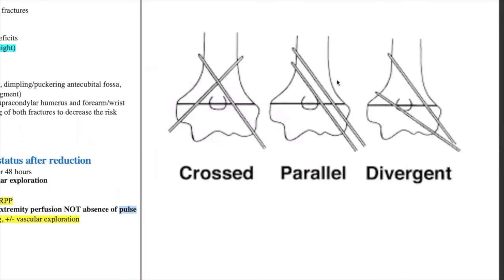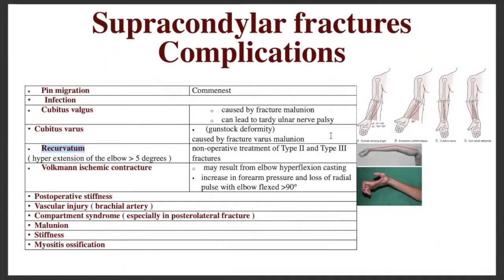Two types of pinning exist: cross pinning or parallel and divergent pinning. Complications of supracondylar fractures include pin migration, infection, cubitus valgus, cubitus varus, recurvatum, Volkmann's ischemic contracture, post-operative stiffness, vascular injuries to the brachial artery, compartment syndrome (especially with posterolateral fractures), malunion, and myositis ossificans — calcification in the muscle.